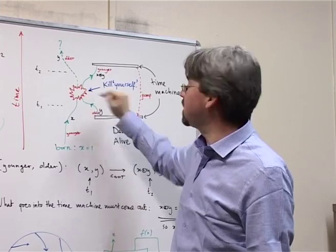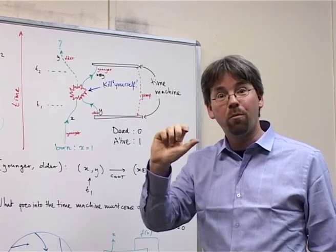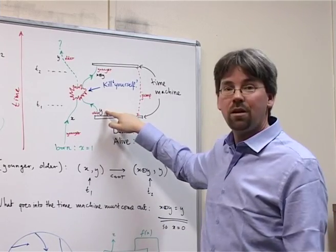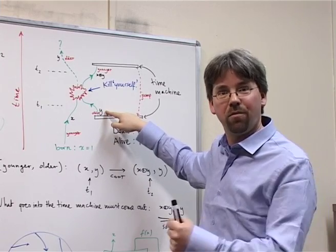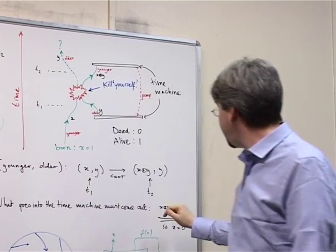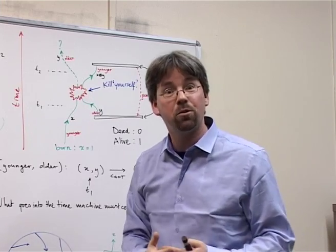And then when my older self kills my younger self, that is a controlled bit flip. Because I go from 1, alive, to 0, dead. But it only happens if I'm already alive, so if I'm 1. So that's why it's controlled. And then when we work through the maths, we find that x plus y equals y. Which means that x must be equal to 0.